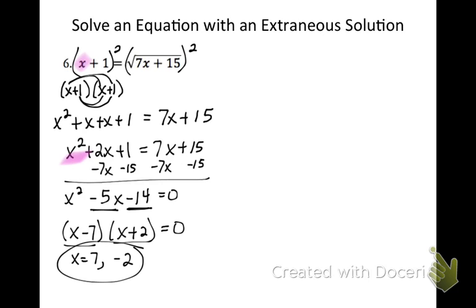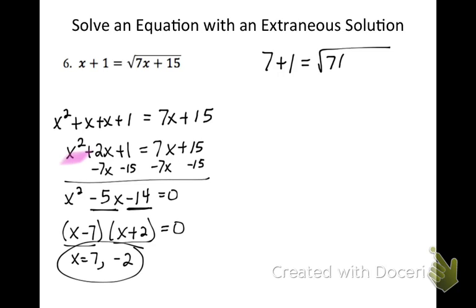So, things that we're looking for. We don't want inside of our radical to be negative. So let me erase everything around my problem so that it's not so crowded. If I plug, let's start with the 7. If I plug 7 into this equation, I'm going to get 7 plus 1 equals the square root of 7 times 7 plus 15. Nothing's going to end up negative here, and in fact, they'll be equal. 8 equals 7 times 7 is 49 plus 15 is 64. So those work out.